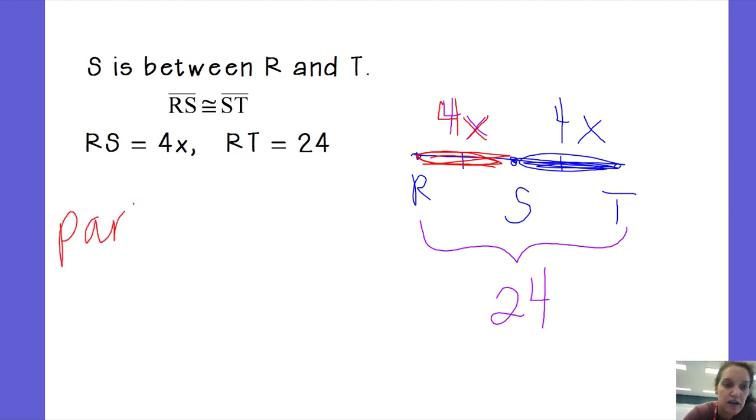Part plus part equals whole. So my first part is 4X, my second part is 4X, and my whole enchilada is 24. Part plus part equals whole. They just happen to be the same because they are congruent.